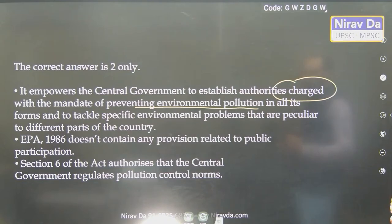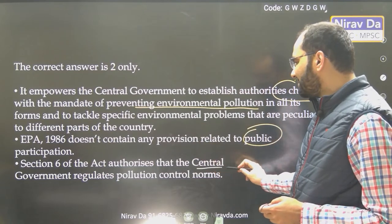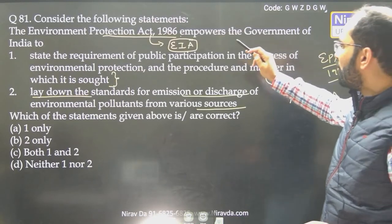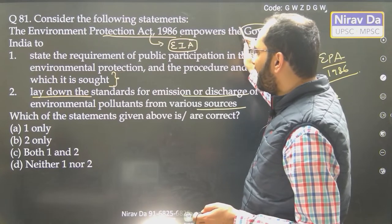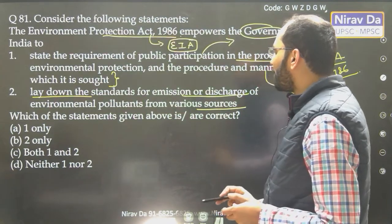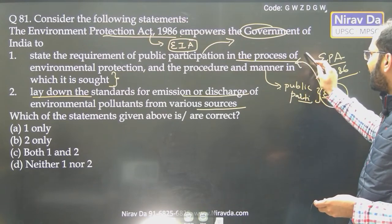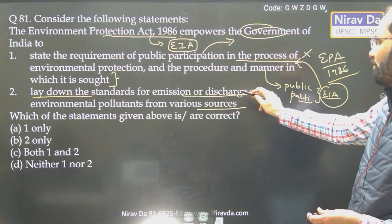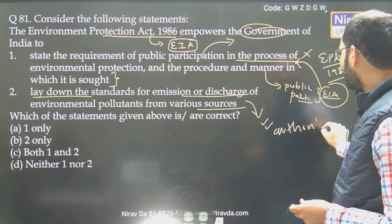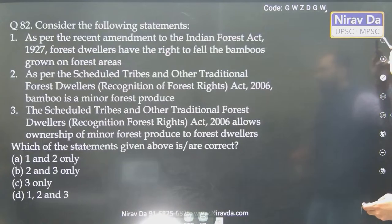It does not contain any provision related to public participation. Section 6 of the Act authorizes the central government to regulate pollution control norms. The EPA empowers the Government of India to state the requirements of public participation — so automatically you will think this is correct — but that is a trap. And laying down standards for emission — yes, that is correct. Because it is setting up various authorities, that is why the answer is going to be 2 only.